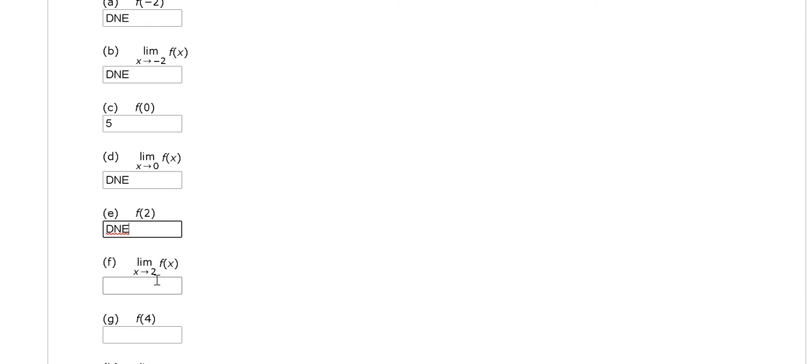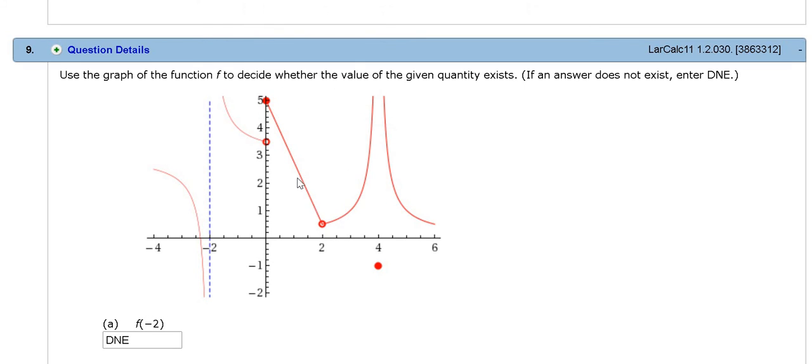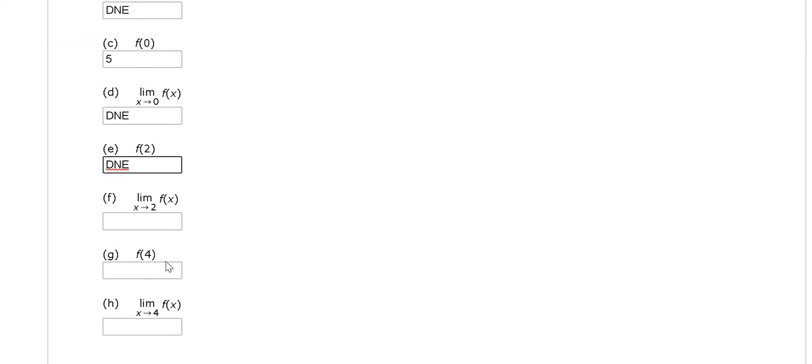Now we want the limit as x approaches 2. As x approaches 2, from the left, it looks like we get 0.5, about a half. And from the right, it's also 0.5 because the y value here is 0.5. As x approaches 2 from the left, the y value approaches 0.5. As x approaches 2 from the right, the y value approaches 0.5. So it's going to be 0.5.